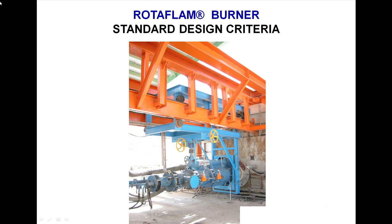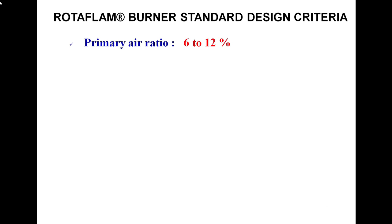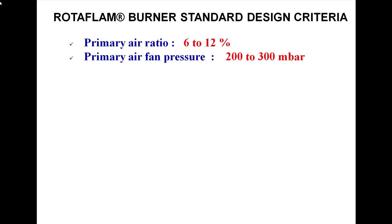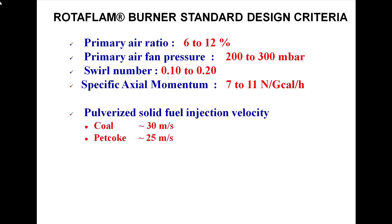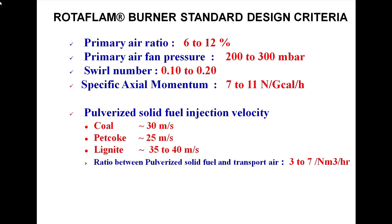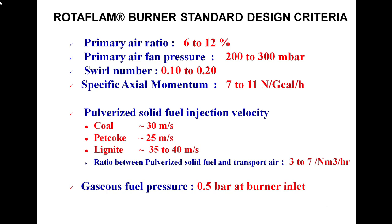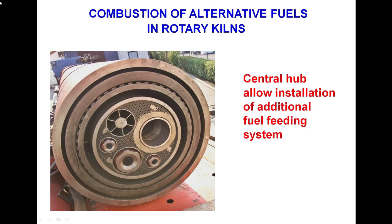Burner standard design criteria: primary air ratio 6 to 12%, primary air fan pressure 200 to 300 millibar, swirl number 0.1 to 0.2, specific axial momentum 7 to 11. Pulverized solid fuel injection velocity: coal 30 meters per second, pet coke 25 meters per second. Ratio between pulverized solid fuel and transport air: 327 newton per meter cubed per hour. Gaseous fuel pressure: 0.5 bar at burner inlet.